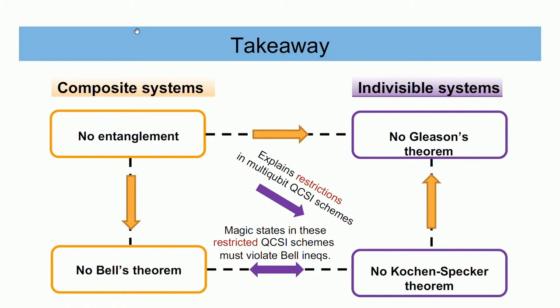Excluding entanglement in composite systems explains the restrictions in the QCSI schemes proposed by Bermejo-Vega et al., because that rules out Peres-Mermin type constructions in the restricted stabilizer circuit. Moreover, magic states used in schemes disallowing entangled measurements must not only carry entanglement but must actually violate Bell inequalities. This is the sense in which the resource aspects of contextuality for multi-qubit systems are also related to resource aspects of entanglement — in a qualitative sense, using logical relations between concepts rather than any measures.